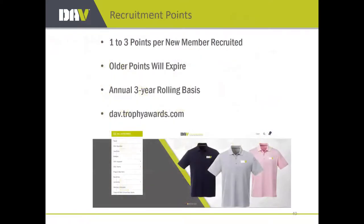Another reason to recruit folks online: you can get up to three points instead of the traditional two for new members recruited. You get more bang for your buck and effort when you recruit online. A couple of years ago we started expiring older points, like any rewards program — we had too much on the bottom line and people with only one or two recruits who didn't have enough to buy anything in the store. Points now expire on a three-year rolling basis — once points have been in the system longer than three years, the next year-end process will expire them. We always expire the oldest ones first, so use your points.